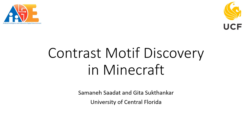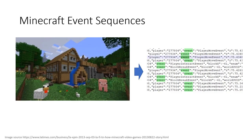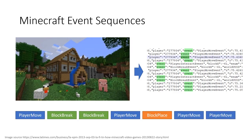Our paper is about contrast motif discovery in Minecraft. When players perform actions in the Minecraft environment, event logs are generated. These event logs form sequences of low-level activities of players. We developed an approach to analyze these sequences.